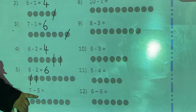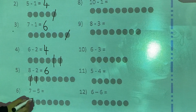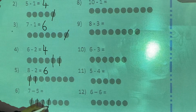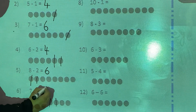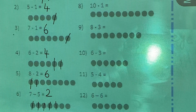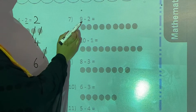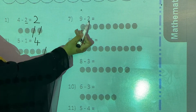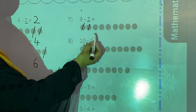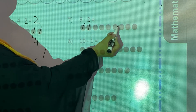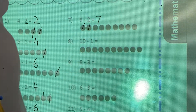Now 7 minus 5. How many do you have to cut? 5 dots. Count: 1, 2, 3, 4, 5. How many are left? 1 and 2. So 7 minus 5 is equal to 2. Now the 7th question: 9 minus 2. How many do you have to cut? 2. Count: 1, 2. How many are left? 1, 2, 3, 4, 5, 6, 7. So 9 minus 2 is equal to 7.